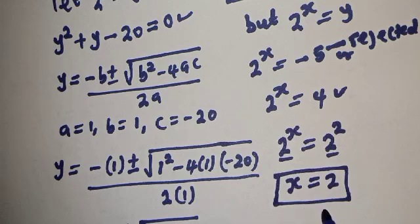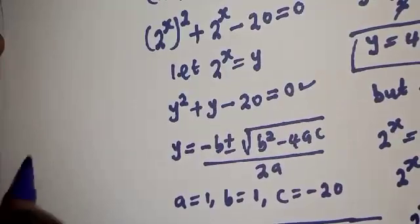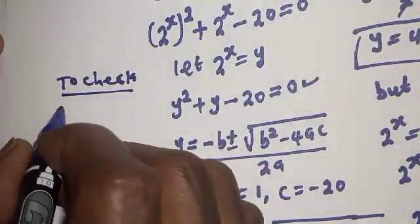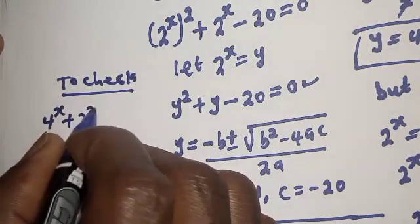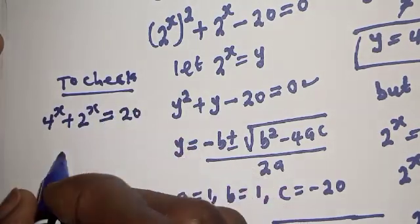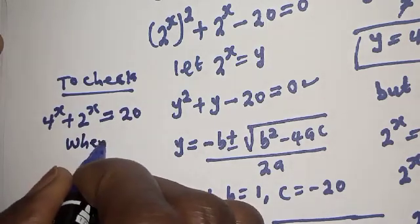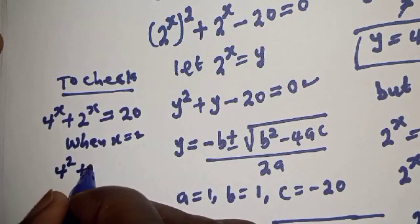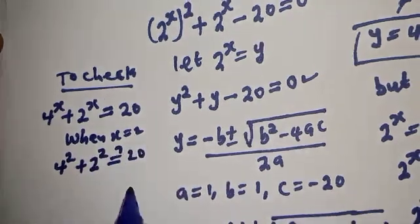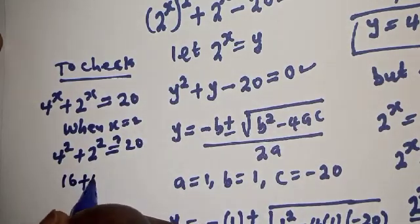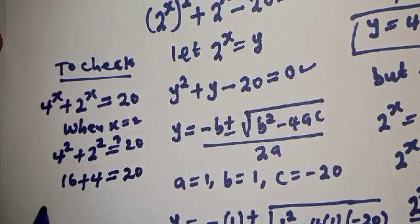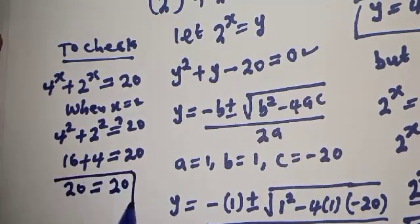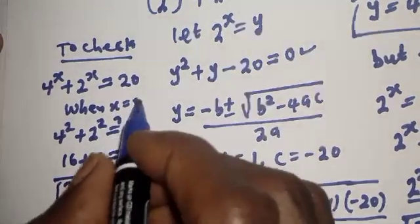We can check to confirm if our answer is right or wrong. Let's check: we have the given equation 4 raised to power x plus 2 raised to power x equal to 20. When x is 2, we have 4 squared plus 2 squared must equal 20. Now 4 squared is 16, plus 2 squared is 4, which equals 20. Therefore, the left-hand side 20 equals 20, which satisfies the given equation at x equal to 2.